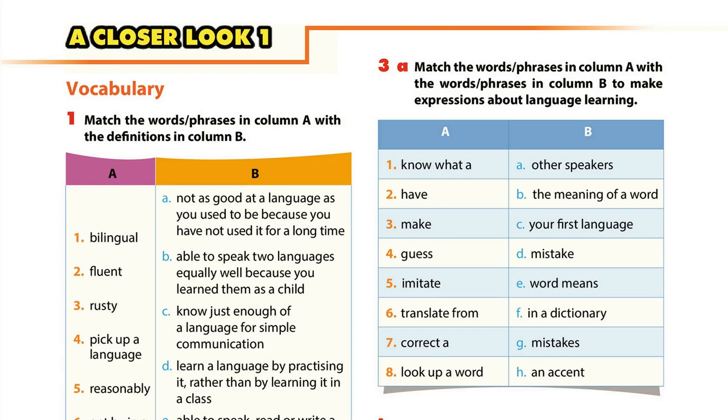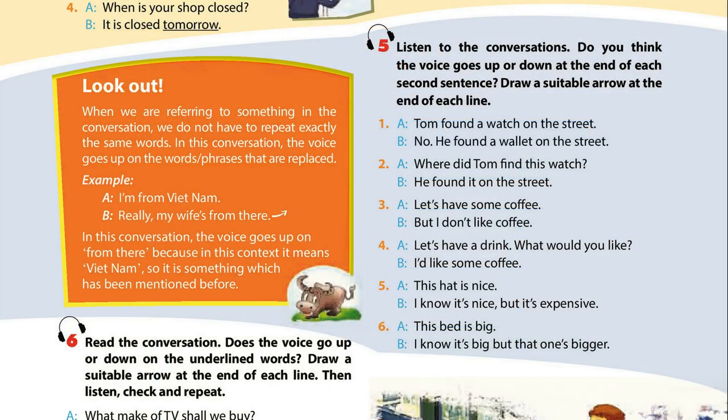Unit 9, Page 34 — A closer look 1: Pronunciation, Activity 5. Listen to the conversations. Do you think the voice goes up or down at the end of each second sentence? Draw a suitable arrow at the end of each line. 1. Tom found a watch on the street. No, he found a wallet on the street.